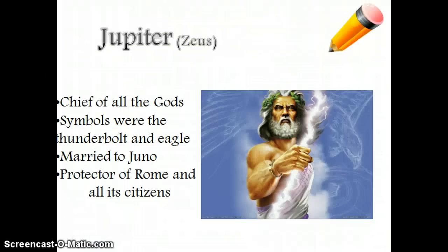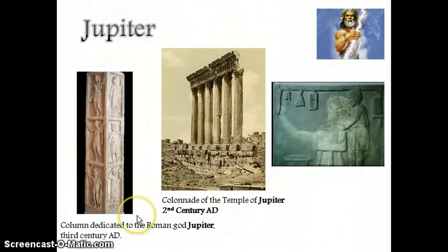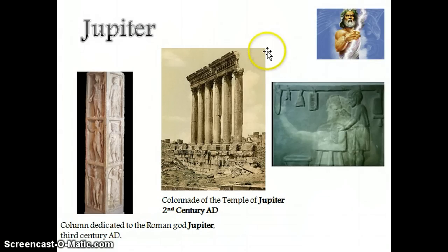The first of the most important Roman gods is Jupiter, the equivalent of Zeus. Jupiter is the chief of the gods. His symbols were the thunderbolt and the eagle. He was married to Juno and was considered the protector of Rome — the patron god of Rome and all of its citizens. There is lots of artwork in ancient Rome dedicated to Jupiter. Here is a column decorated in dedication to Jupiter. And right in the middle of Rome, next to the forum — which is like the National Mall, an area with lots of government buildings — there was a huge temple to Jupiter, right in the middle of the forum.